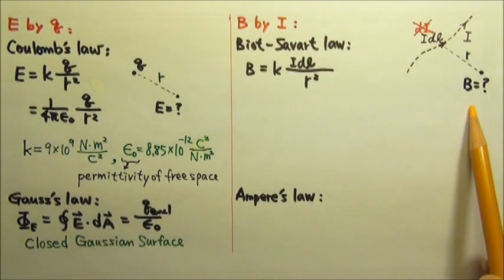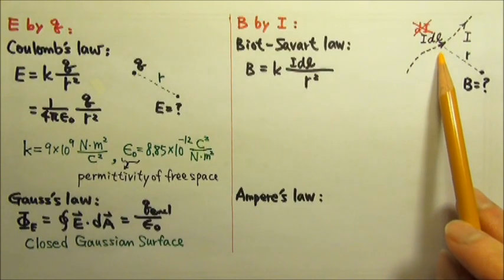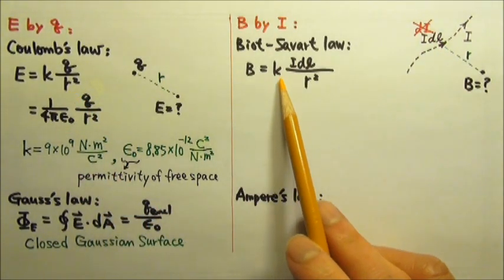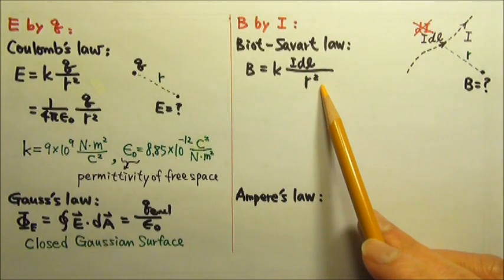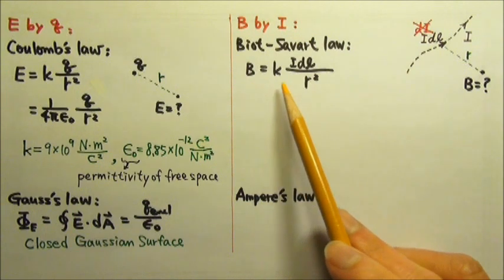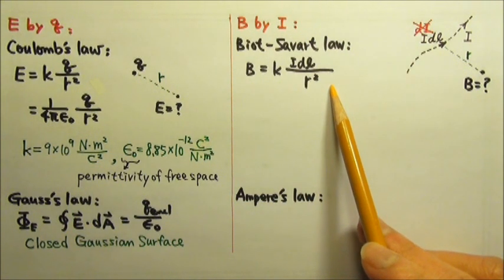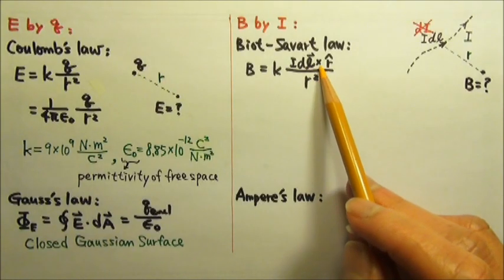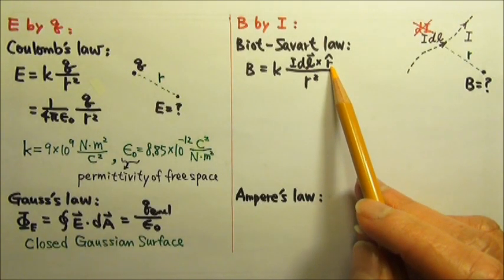The magnetic field produced by this point current source, just like Coulomb's law, is k times the point source divided by r squared. Except that for magnetic field, it's a little more complicated. We have to write I times dL the vector cross the unit vector r.